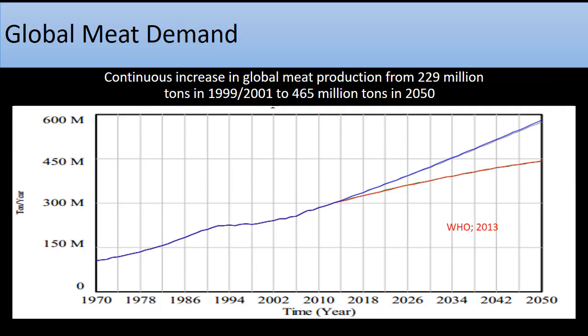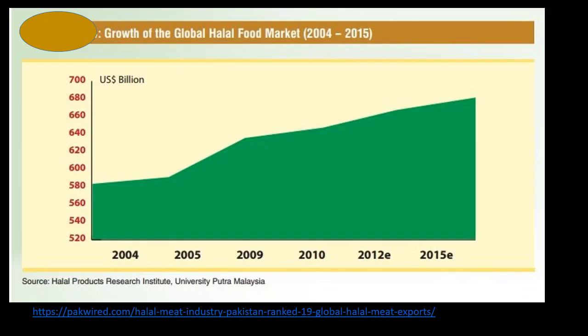According to the WHO 2013, there is a continuous increase in global meat production from 229 million tons in 1999–2001 to 465 million tons in 2015, indicating strong potential for meat and beef production globally. This chart shows the growth of the global halal food market, with a continuous increase from 2004 to 2015. Pakistan is ranked number 19 in global halal meat exports.